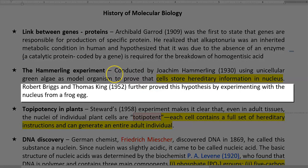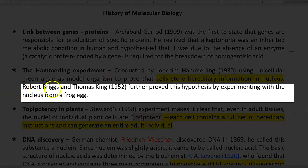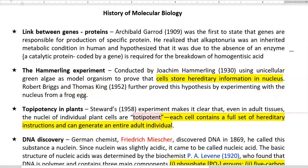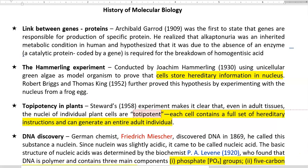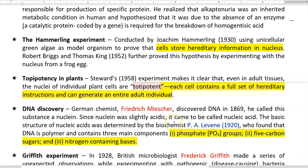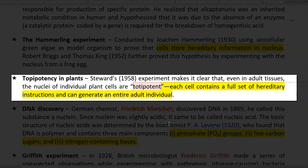The same thing was confirmed further by Robert Briggs as well as Thomas King by using frog egg as a sample. By using frog egg, they confirmed that the nucleus is the storehouse of hereditary information. The next topic is totipotency in plants.